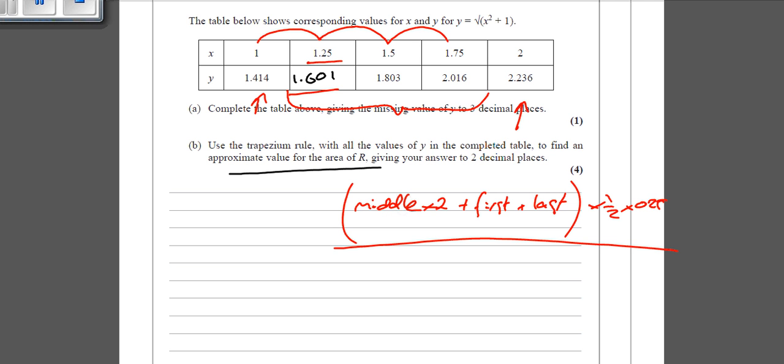So you put all that into your calculator. So 1.601 plus 1.803 plus 2.016, add those together, double it, add the first one, add the last one, times it by half, times it by 0.25. And hopefully we get the correct answer. And again, doing that twice in your calculator just to make sure that you get the correct values. You get 1.81 if we've done it correctly. So that's how to do all these questions based on the trapezium rule. Should be nice and easy to mark those ones.